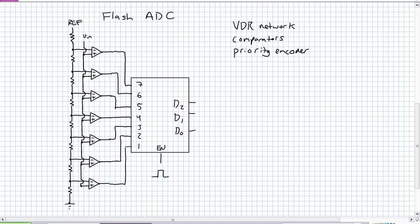The basics of a flash analog to digital converter are three things. A voltage divider network, very similar to what we saw in the 555 timer. Bunch of comparators, very similar to what we saw in the 555 timer. Finally, a priority encoder. The voltage divider network, all it is is a network of identical resistors.